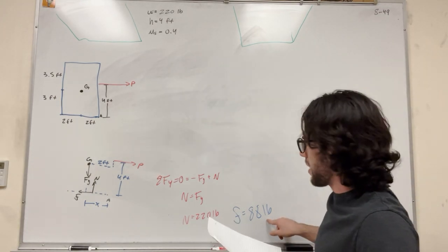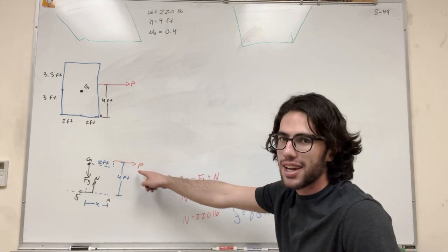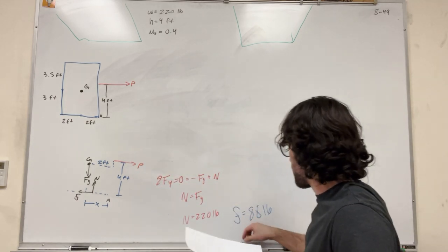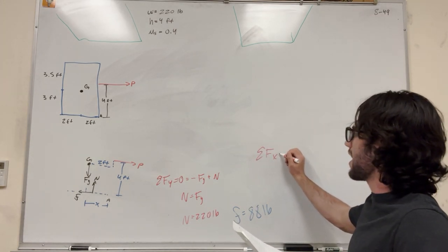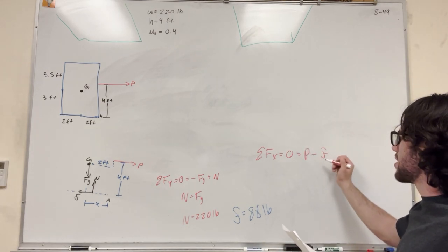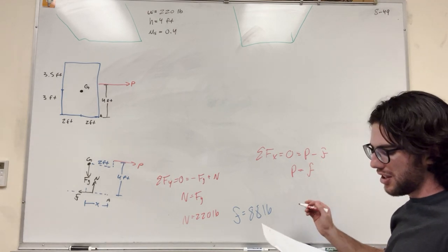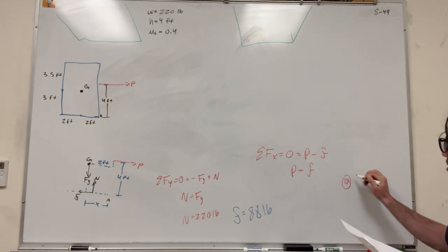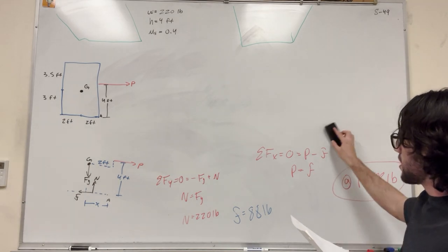So if friction is equal to 88 pounds before it breaks equilibrium, then P would break at 88 pounds, right? Because sum of forces in the X direction. Sum of forces in the X direction, it's equal to zero. We can say it's equal to P to the right minus friction. So then again, P is equal to friction. So it breaks at 88 pounds. So for A, P is equal to 88 pounds.